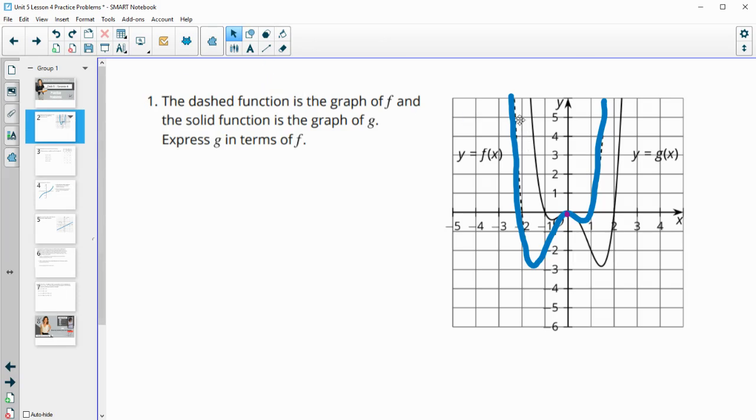Number one gives us the dashed function, which I've highlighted here in blue, is f, and the solid function is g. We want to express g in terms of x. So I want to write g of x equals what do I need to do to f to get it to be equal to g or to land on g.